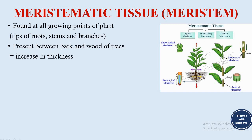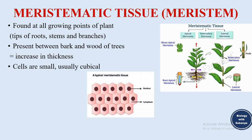The intercalary meristem is the meristem which is present at the nodes of the developing branch from where leaves arise. Lateral meristem, also known as cambium meristem, is present between the bark and the wood of trees, which results in the thickness of the branch.